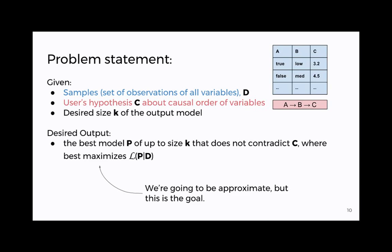So that's the space of models that we're willing to accept. Now let's get on to actually what the general task is. Basically we're going to be given a set of samples, a data set, it's going to look like something like that that you see on the right. We're going to get that causal order hypothesis, what direction do these connections flow in. And then finally we're going to get a target size. And once we have those, what we actually want to get is the best model P of up to size K that doesn't contradict the causal order hypothesis and that actually maximizes the likelihood of the program given the data. Now that's a strong goal. We're actually going to be quite approximate in that, but that's the actual target.